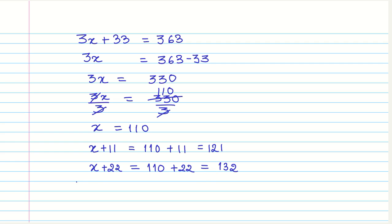Now, let us verify that the sum of these 3 is actually equal to 363 or not. So let us add 110 plus 121 plus 132. If I just add 2 plus 1 is 3, plus 0 is 3, then we have 3 plus 2, 5, plus 1, 6, and 1, 1, and 1, 363. Therefore, these are the 3 consecutive multiples.